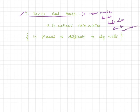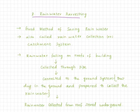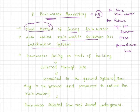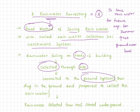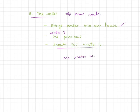Number seven: tanks and ponds are also a resource of water and are man-made. The last resource is rainwater harvesting. In this method, the ground system absorbs water collected from rooftops using pipes and helps in recharging our underground water level.